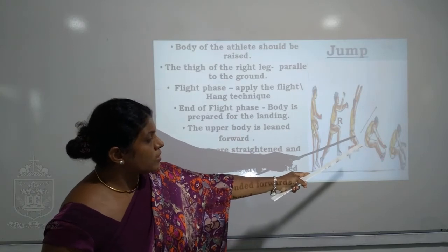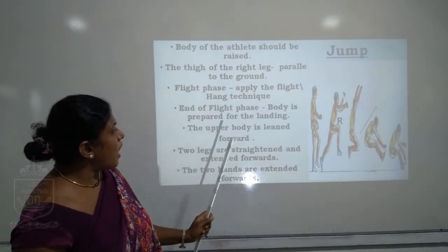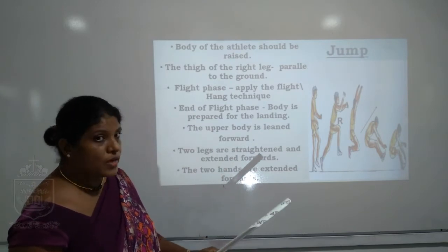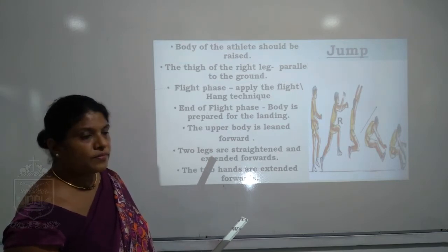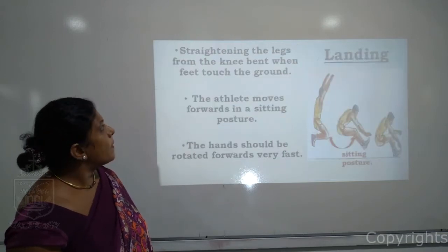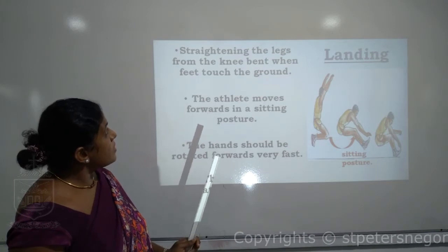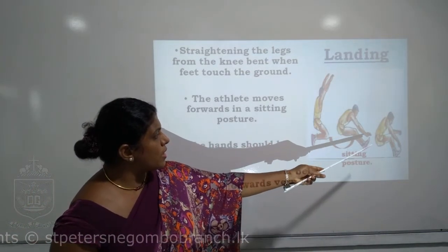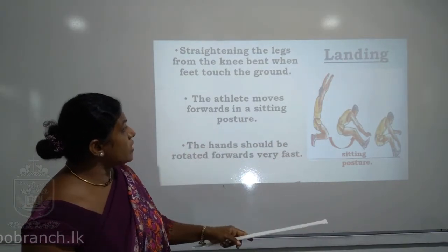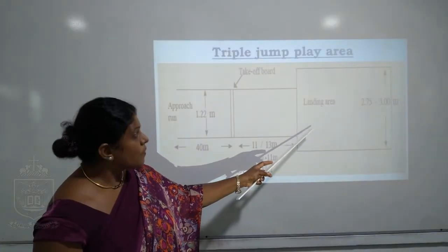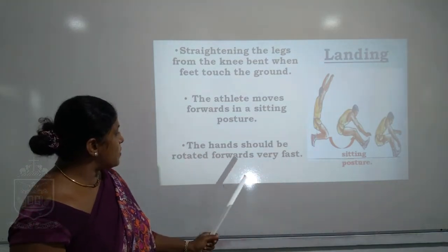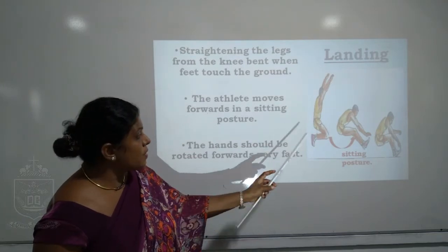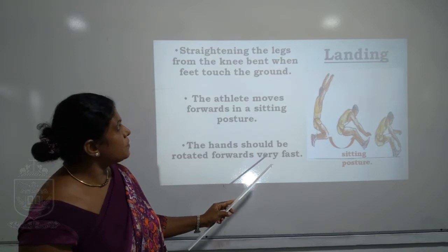When getting ready for the landing step, you have to lean the body: the upper body is leaned forward and the two legs are straightened and extended forward, with the two hands also extended forward. When the foot touches the ground, straighten the legs from the knee bend. The athlete moves forward into the sitting posture, and the hands should be rotated forward very fast.